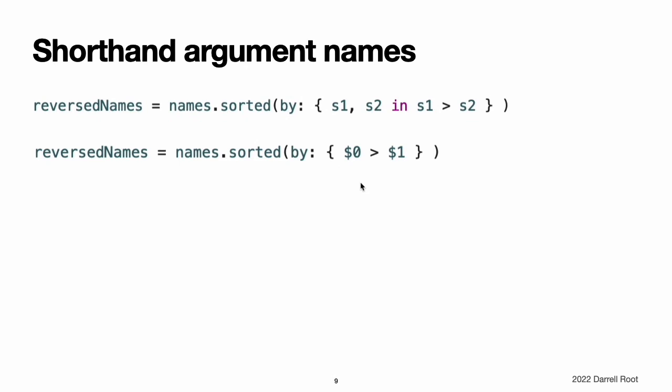Shorthand argument names. Swift automatically provides shorthand argument names to inline closures, which can be used to refer to the values of the closure's arguments by the names $0, $1, $2, and so on. If you use these shorthand argument names within your closure expression, you can omit the closure's argument list from the definition. The type of the shorthand argument names is inferred from the expected function type, and the highest-numbered shorthand argument you use determines the number of arguments that the closure takes. The in keyword can also be omitted because the closure expression is made up entirely of its body. Here, $0 and $1 refer to the closure's first and second string arguments. Because $1 is the shorthand argument with the highest number, the closure is understood to take two arguments. Because the sorted-by function expects a closure whose arguments are both strings, the shorthand arguments $0 and $1 are both of type String.